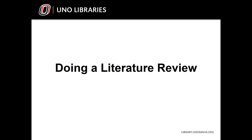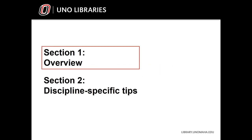Welcome to UNO Libraries Literature Review Workshop. In this workshop, you'll find out what it means when people say 'the literature,' and why you should review the literature when working on a significant research project like a thesis or dissertation. In the first part of the video, I'll talk about the components of a good literature review. At the end of this section, you'll be able to skip ahead to your specific discipline for tips from librarians. Click on the bookmark icon in the upper right corner of your screen to view and select your discipline's chapter. Whether you study the arts, sciences, technology, or humanities, we've got you covered.